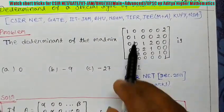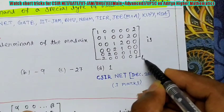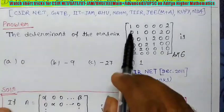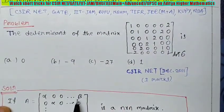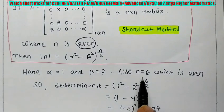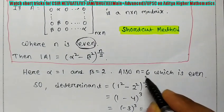In this question, you can see the order is given 6 by 6. So that means N is 6. And alpha, you can see, is 1 and beta is 2. So here alpha equals 1, beta equals 2, and N is 6, which is an even number.